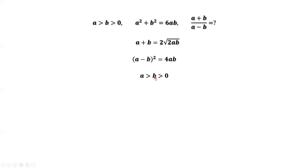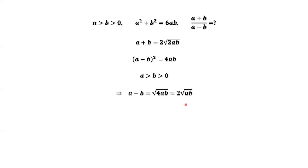Since A is bigger than B, A minus B is positive. Therefore, taking square roots on both sides, we have A minus B equals the square root of 4AB, which equals 2 times the square root of AB.